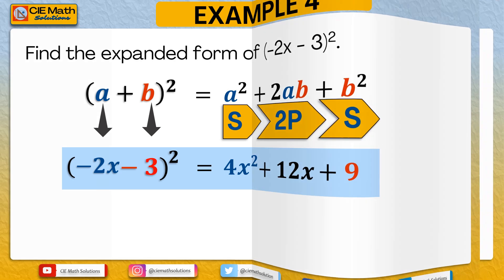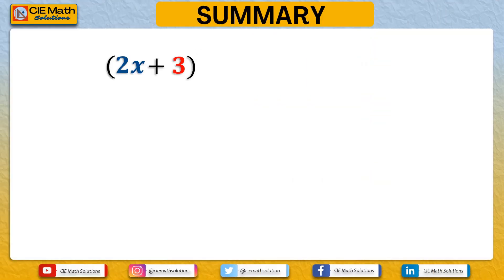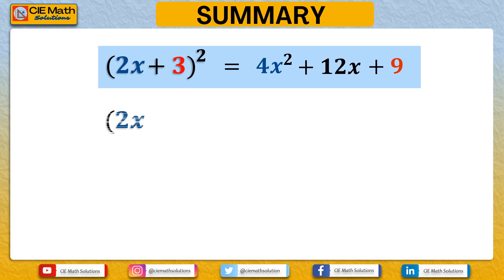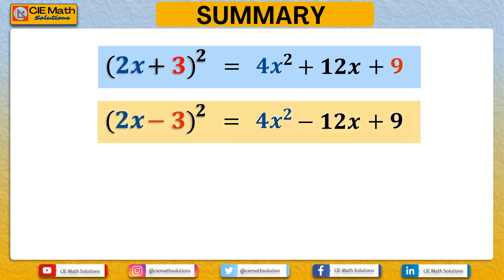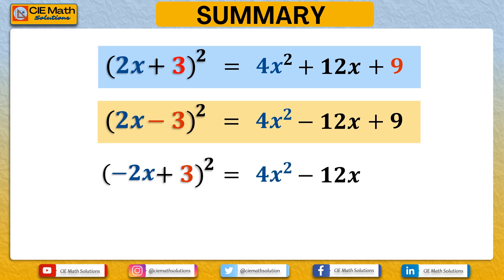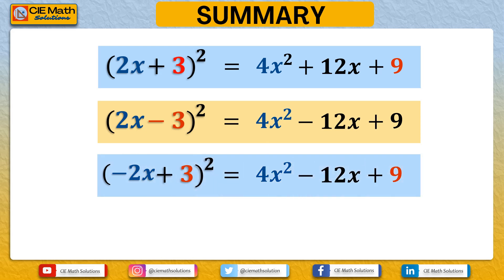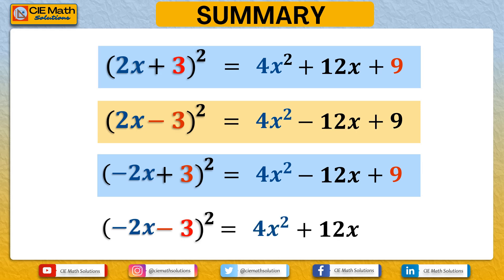Summarizing the binomials we have expanded: 2x plus 3 raised to 2 equals 4x squared plus 12x plus 9. Second, 2x minus 3 squared equals 4x squared minus 12x plus 9. Third, negative 2x plus 3 squared equals 4x squared minus 12x plus 9. And the last example, negative 2x minus 3 squared, equals 4x squared plus 12x plus 9.